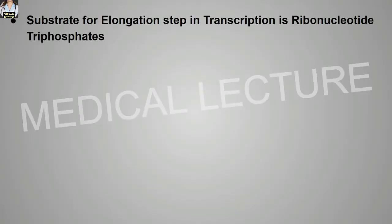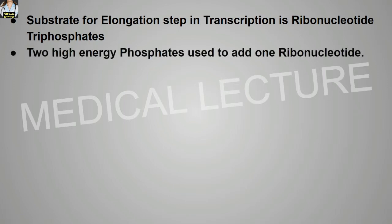The substrate for the elongation step in transcription is the ribonucleotide triphosphates. Two high-energy phosphates are used to add one ribonucleotide.